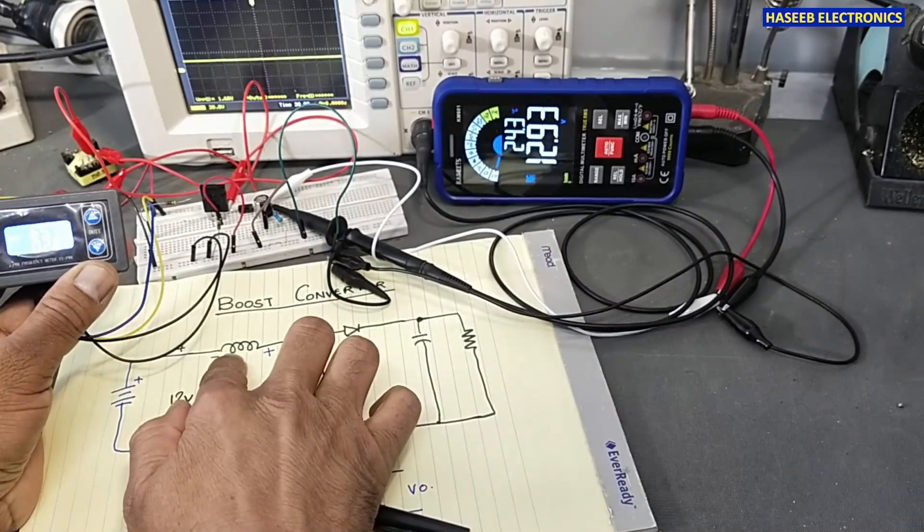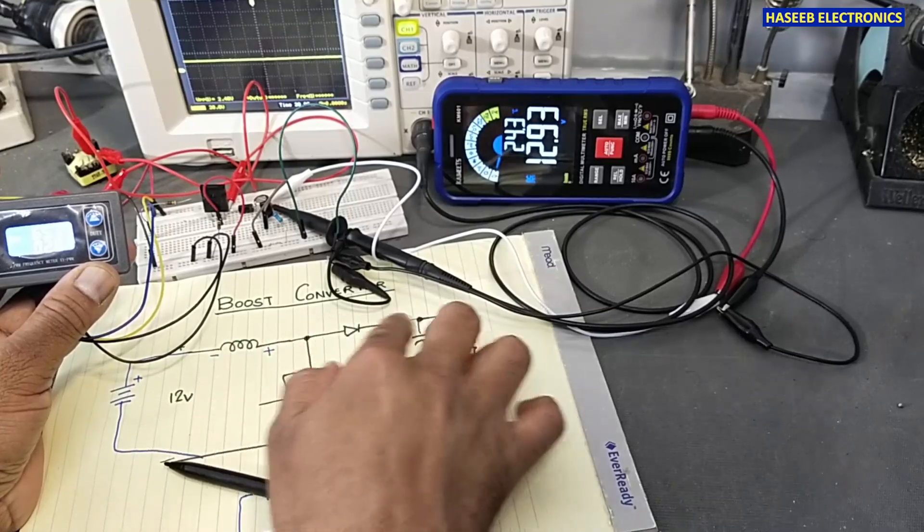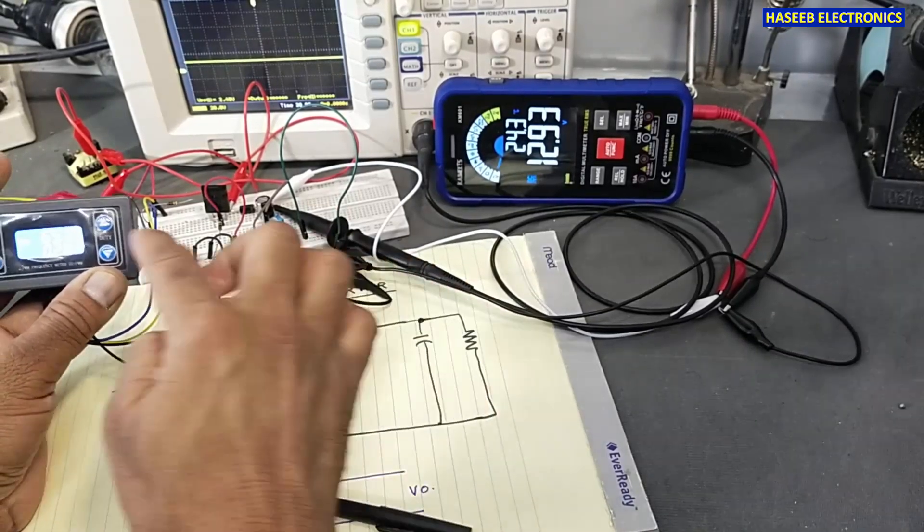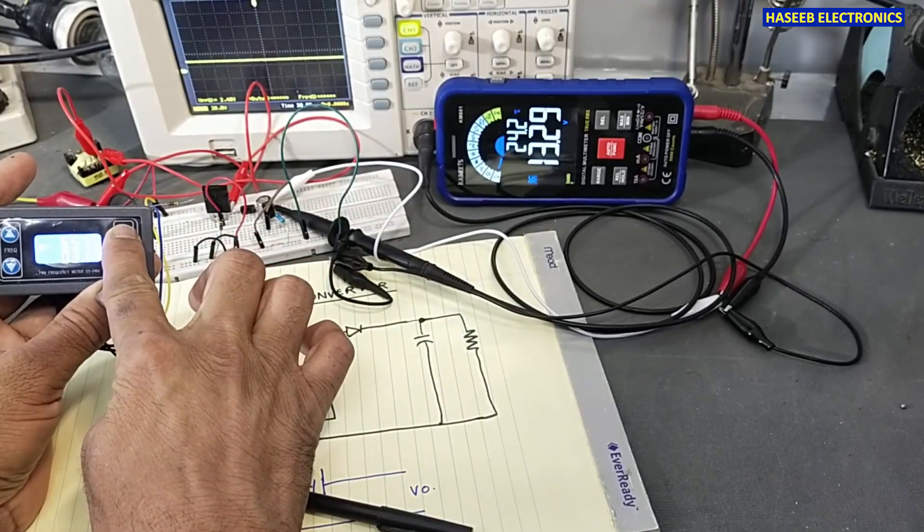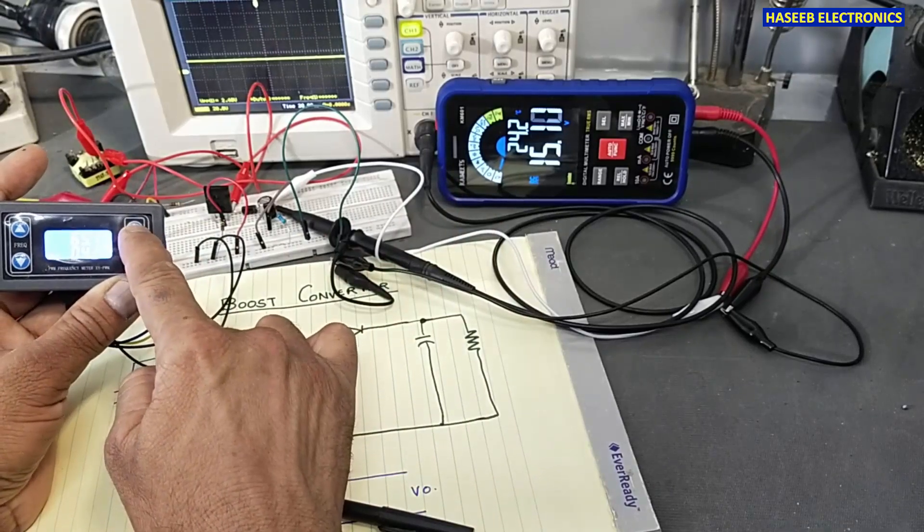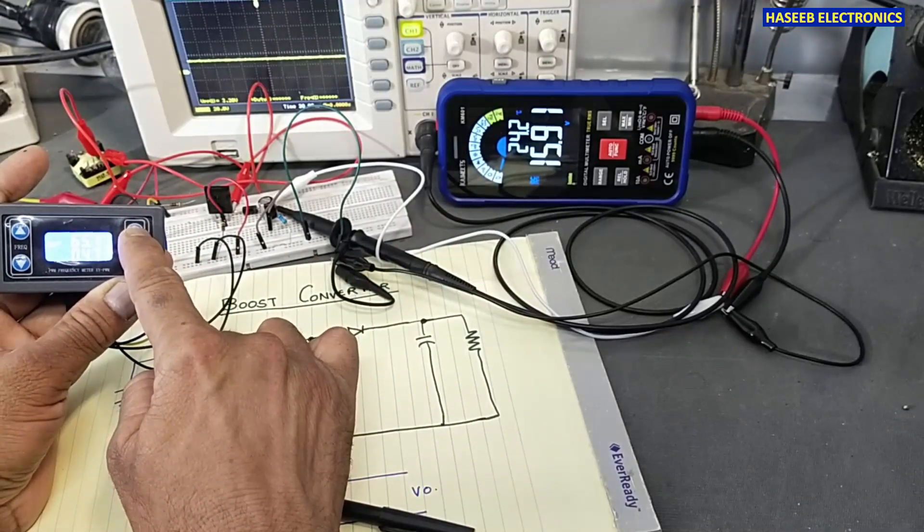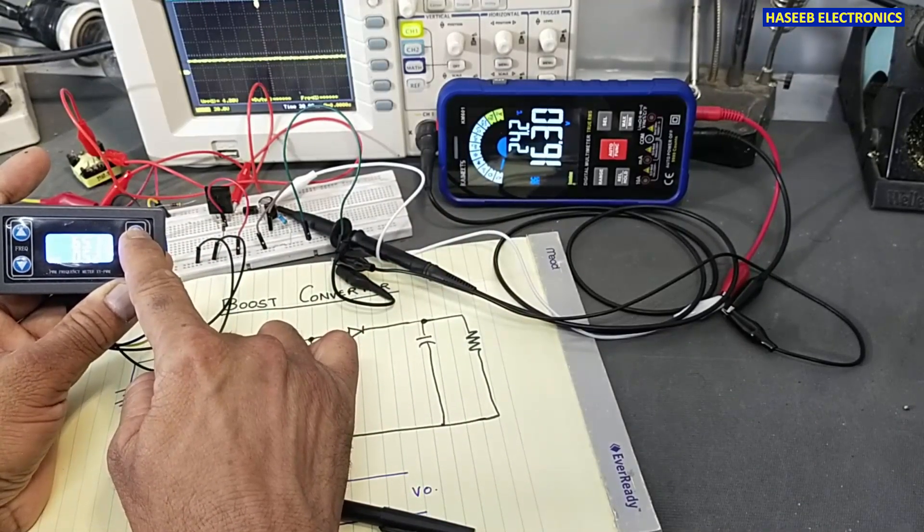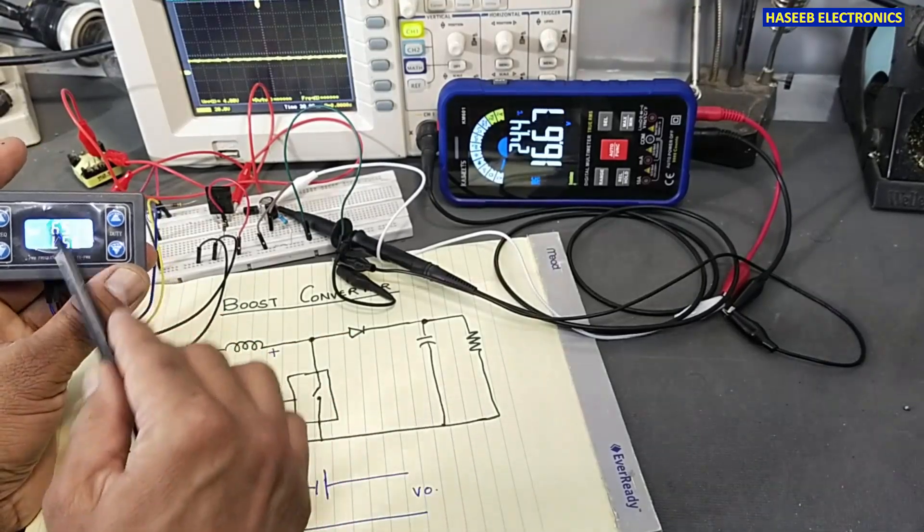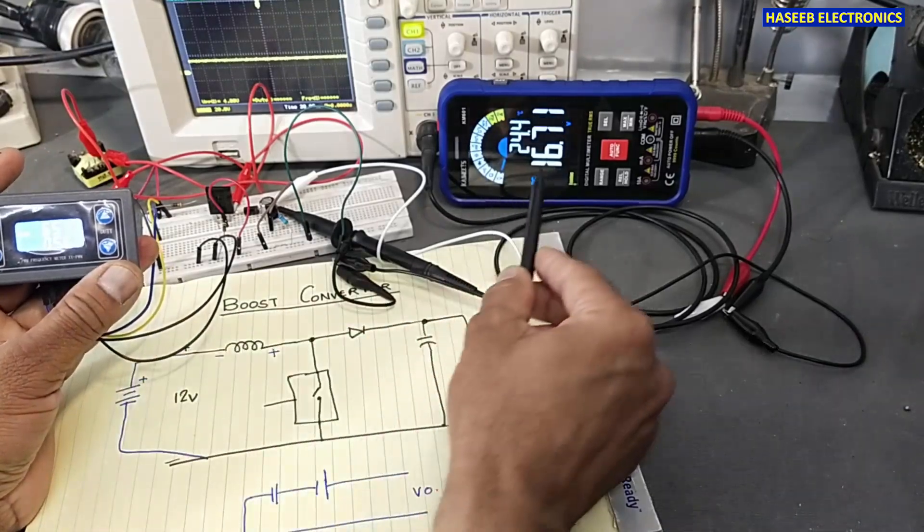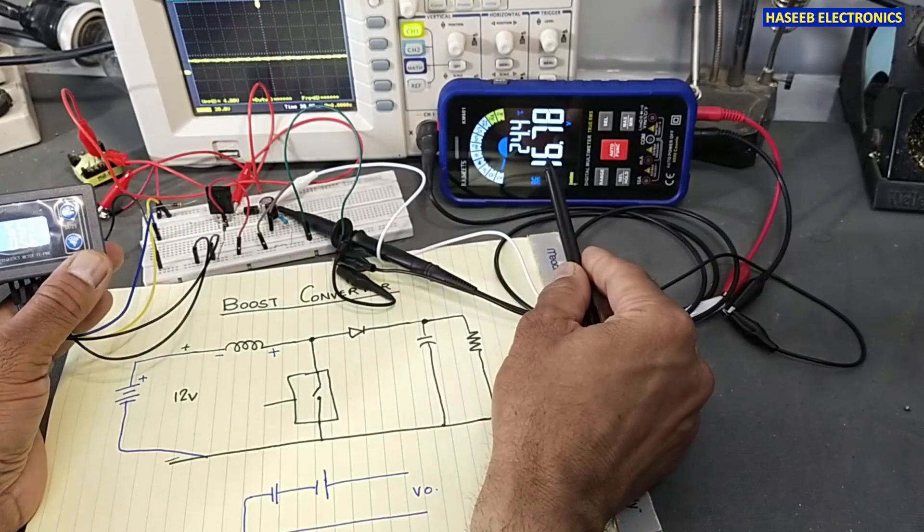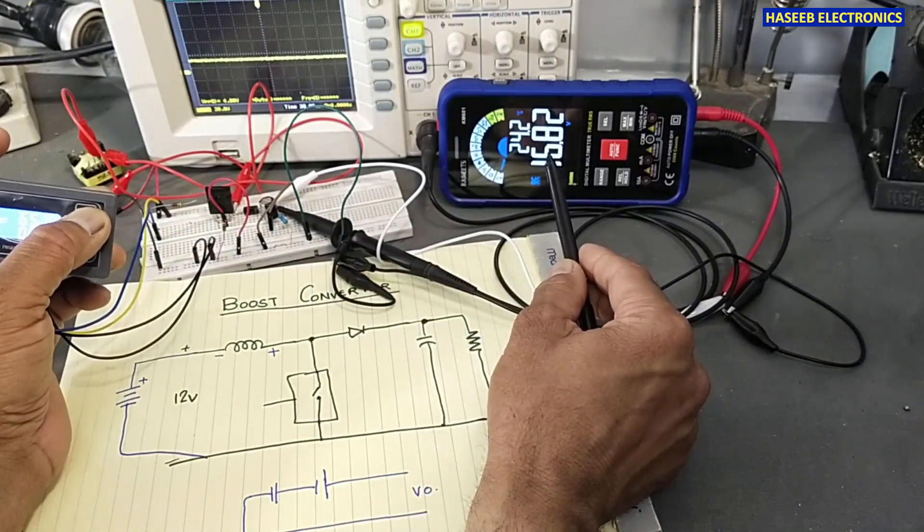And the inductor size will define the output voltage - how much volt we want to add. 13 volts, 13 volts, 15 volts. We can see at 56 percent we applied 12 volts but we are receiving approximately 16, 17 volts.